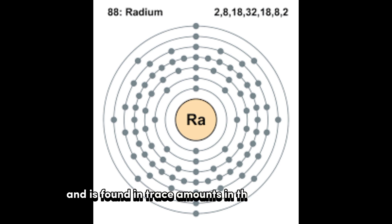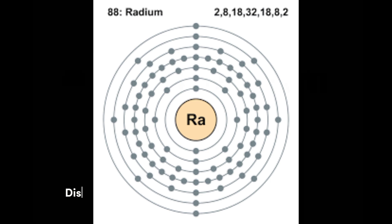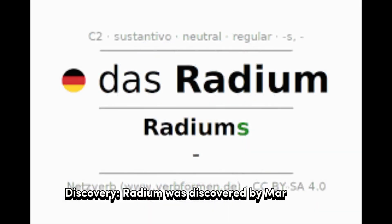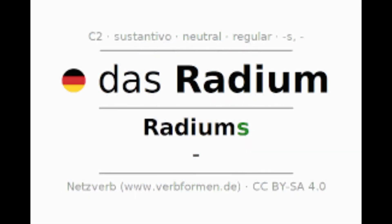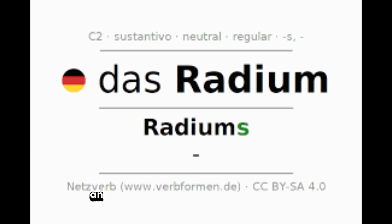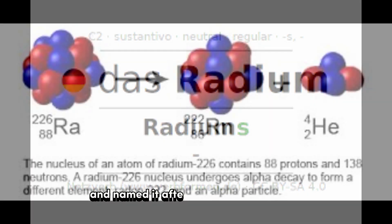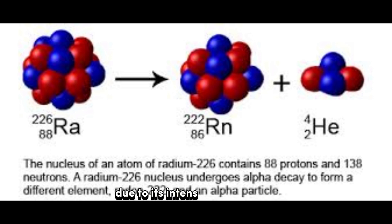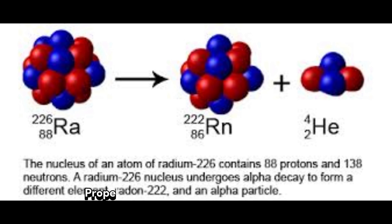Radium was discovered by Marie Curie and Pierre Curie in 1898. They isolated it from uranium ore and named it after the Latin word 'radius,' meaning ray, due to its intense radioactivity.